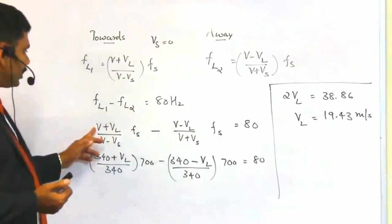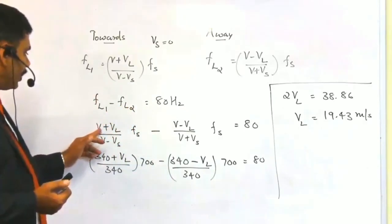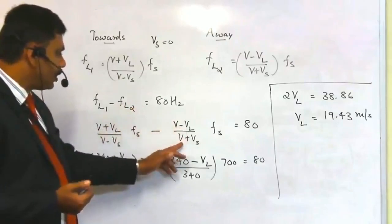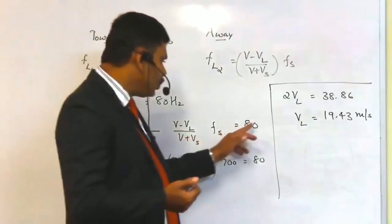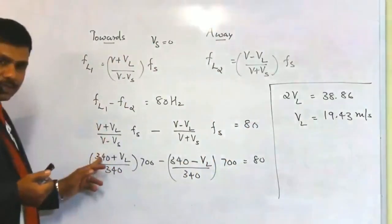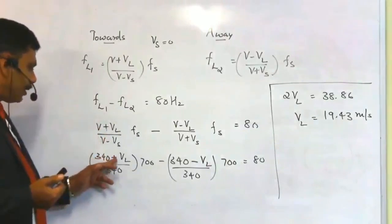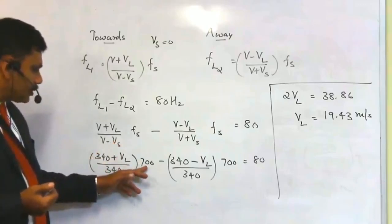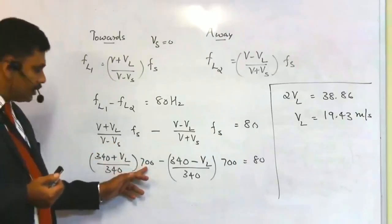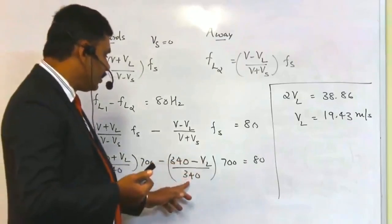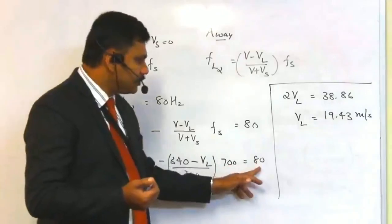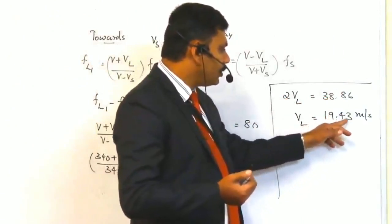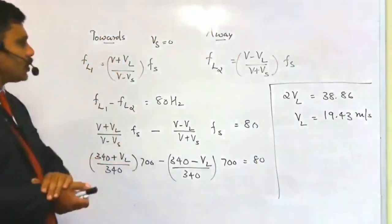Writing the equation: FL1 − FL2 = [(V + VL) / (V − Vs) − (V − VL) / (V + Vs)] × Fs = 80. Substituting the values: velocity of sound in air is 340, Vs = 0, Fs = 700. This gives: (340 + VL)/340 × 700 − (340 − VL)/340 × 700 = 80. Solving: 2VL × 700/340 = 80, giving VL = 19.43 meters per second.